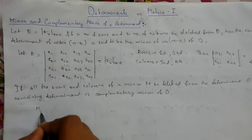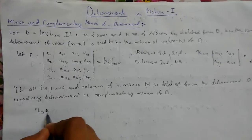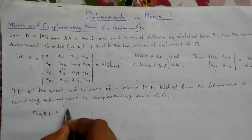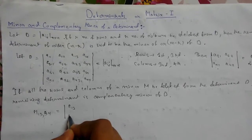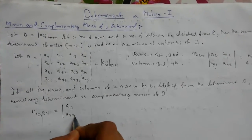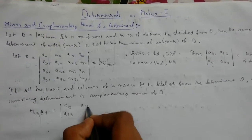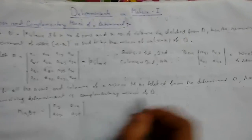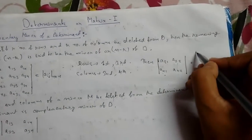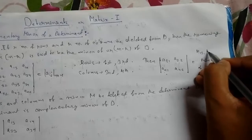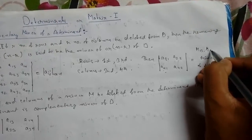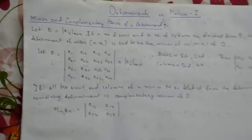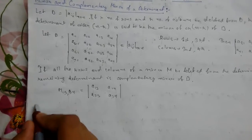What will be left is the complementary minor M_13,34, which will be the determinant with elements a13, a14 in the first row and a33, a34 in the second row. So this was the complementary minor.